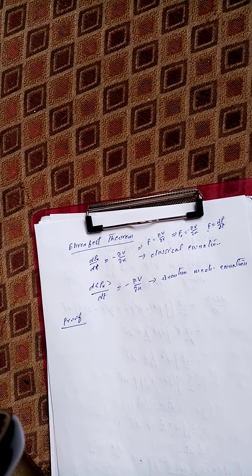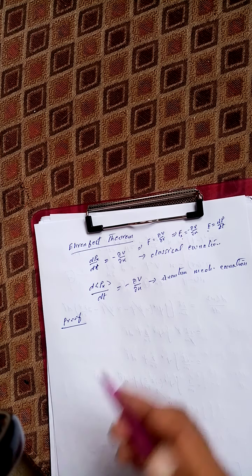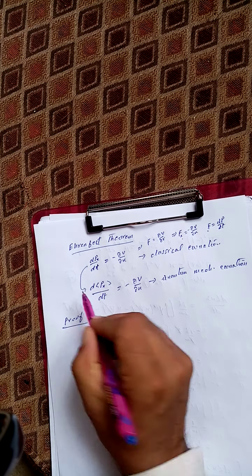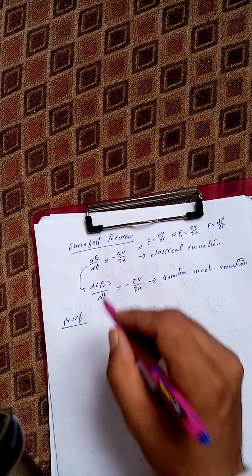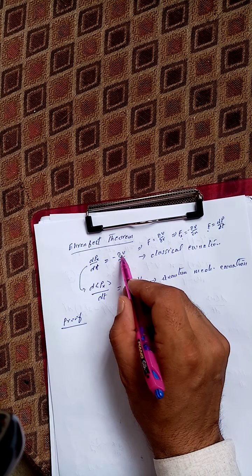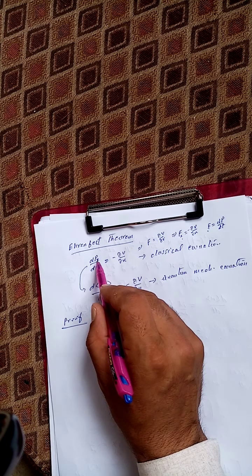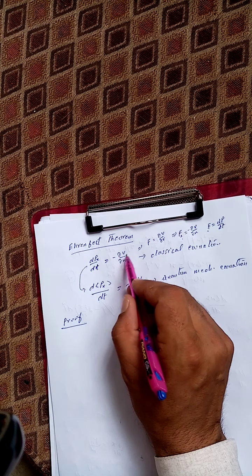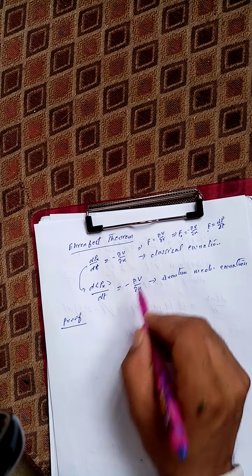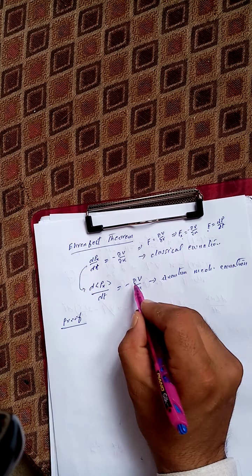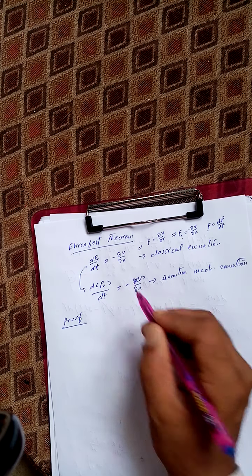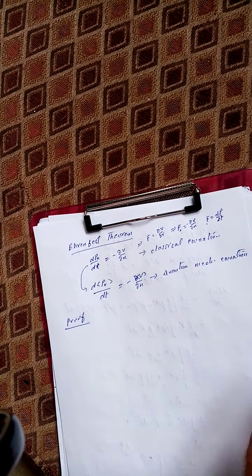Now, according to Ehrenfest's theorem, this equation is also valid in quantum mechanics. However, there is a condition: classical variables like p_x (the x-component of momentum) and potential V will be replaced by their expectation values. Now we will prove this.